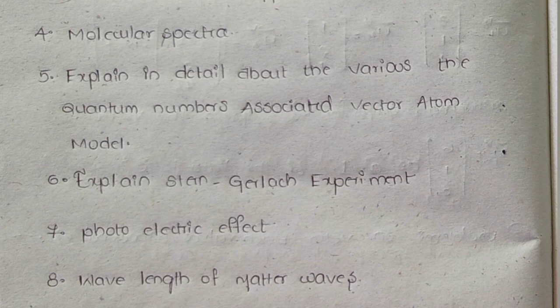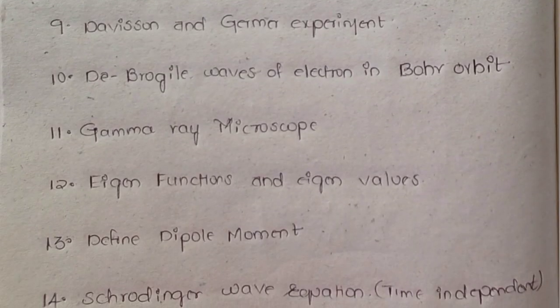Sixth, explain the Stern-Gerlach experiment. Seventh, photoelectric effect. Eighth, wavelength of matter waves. Ninth, Davisson and Germer experiment. Tenth, de Broglie's waves of electron in Bohr's orbit.